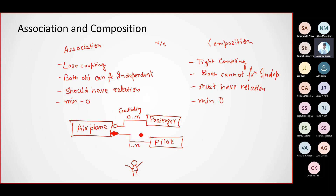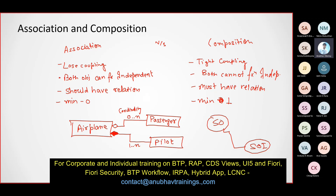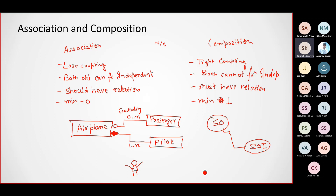It's a must-have relation. The minimum cardinality value is always one — at least one pilot is required to fly a plane. This is called composition. In CDS, when you take a sales order and sales order item, that is a composition, not association. Can you have a sales order item without a sales order header? No — very good.